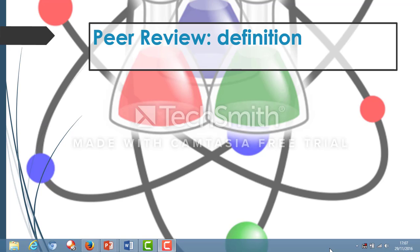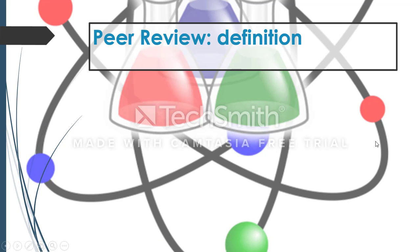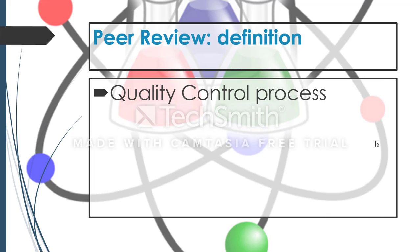Now we've looked at what we mean by journals, we can start looking at what peer review is. At the bottom of page 64, in the shaded box, you'll find a definition of peer review — you need to learn this in case you're asked in an exam. Peer review is a quality control process, meaning its purpose is to ensure that any reports that get published aren't made up or rubbish, and have been validated as genuine scientific research.